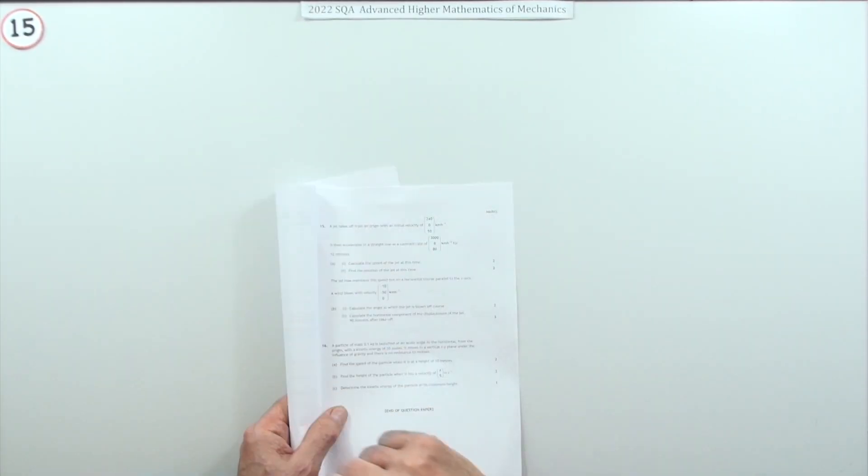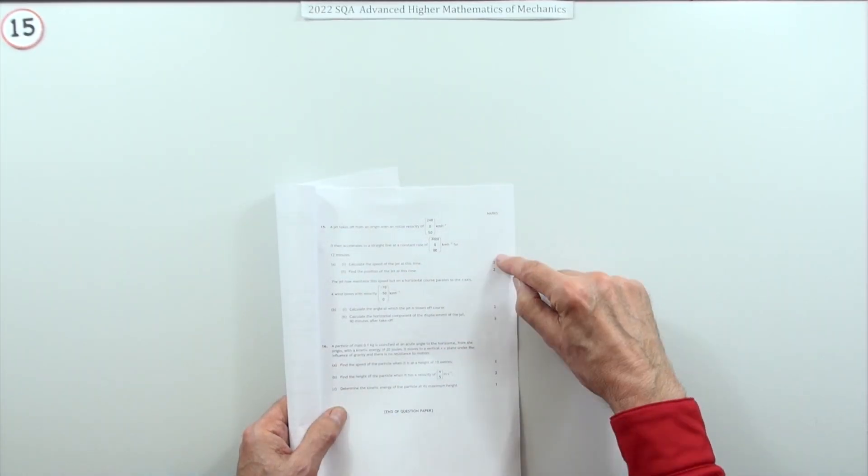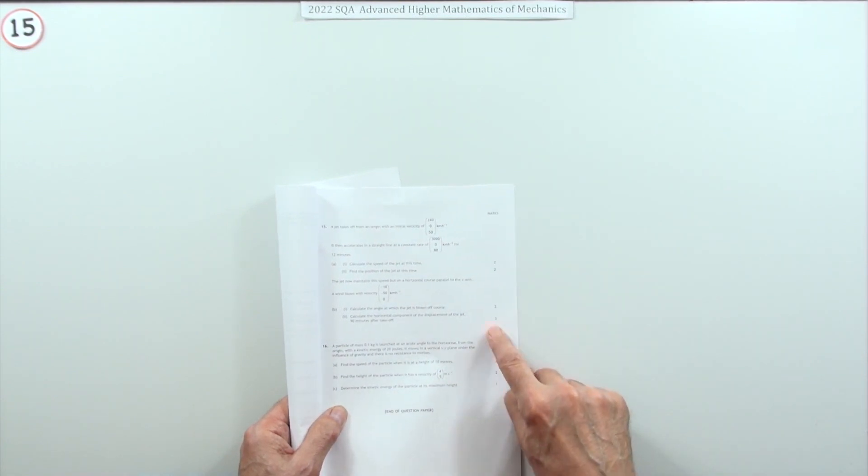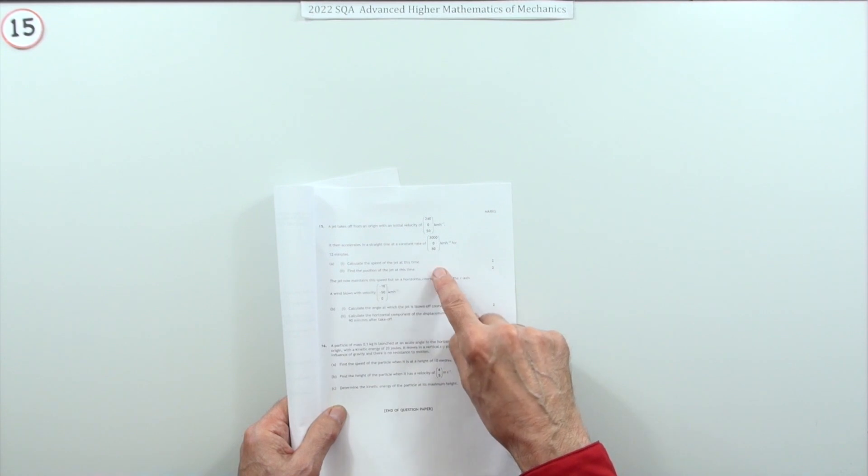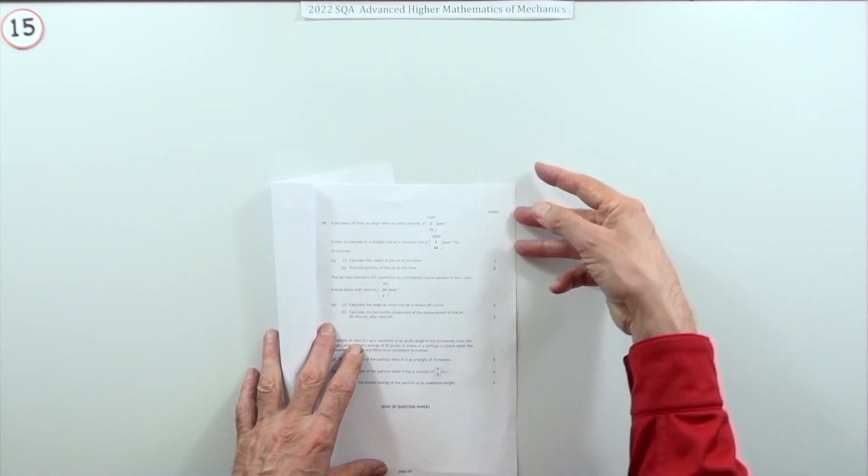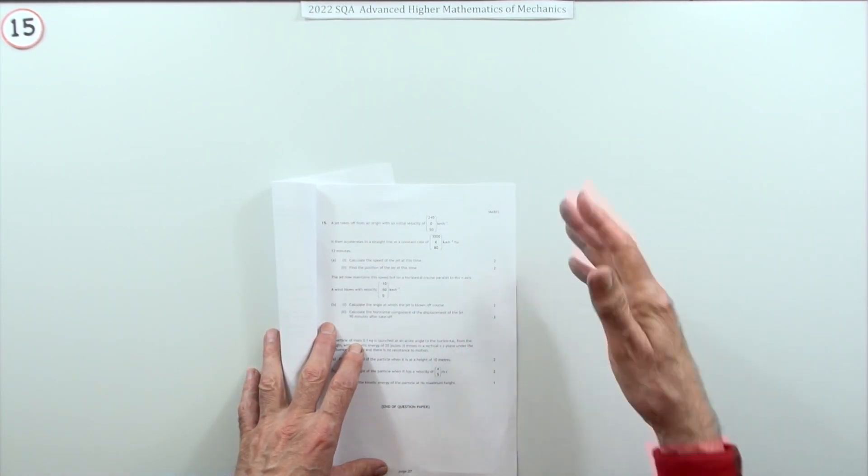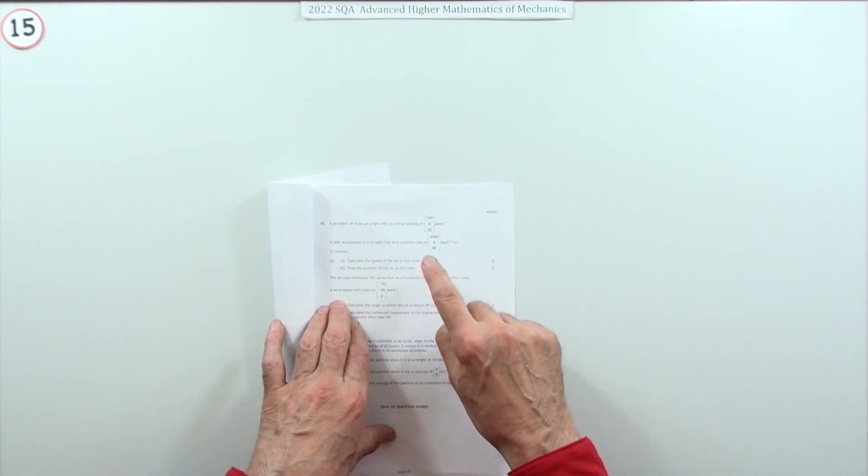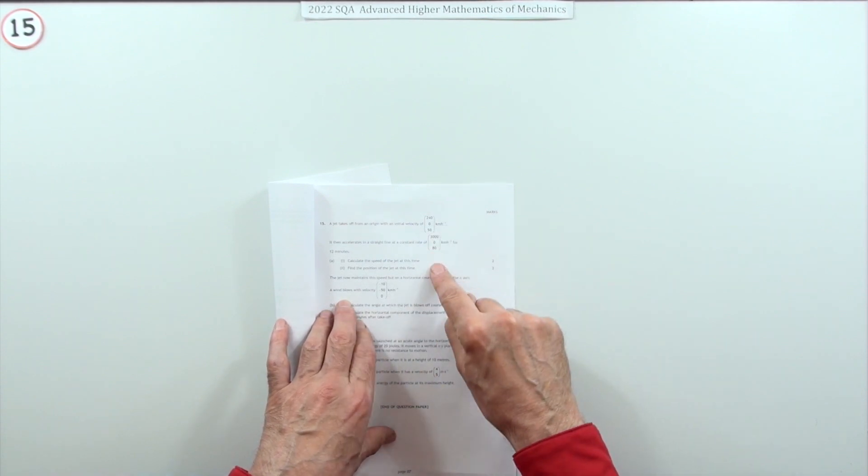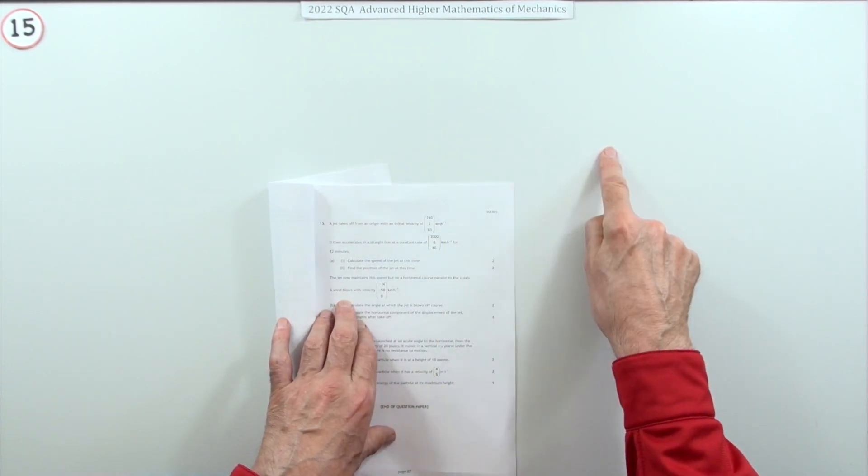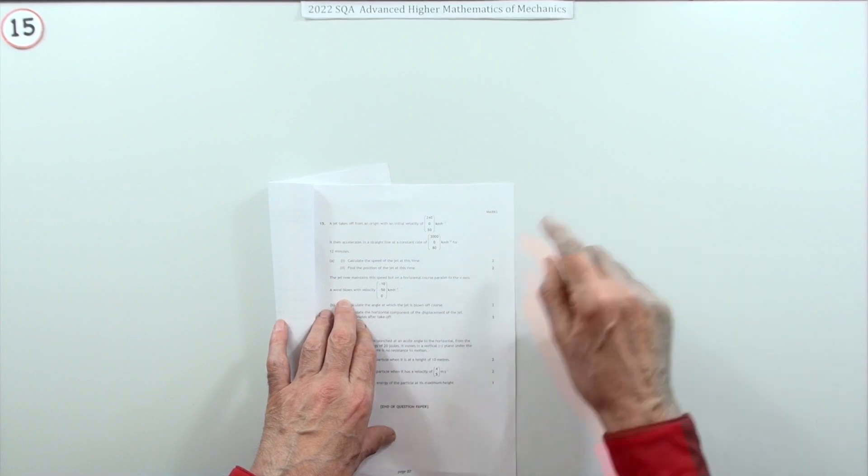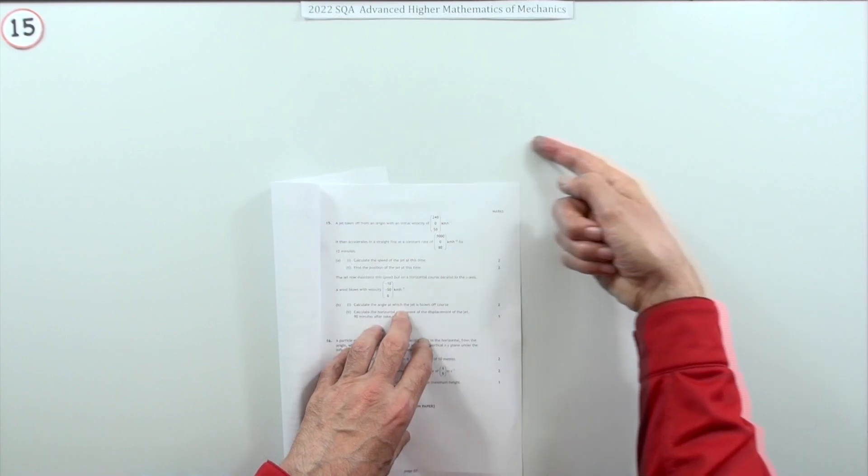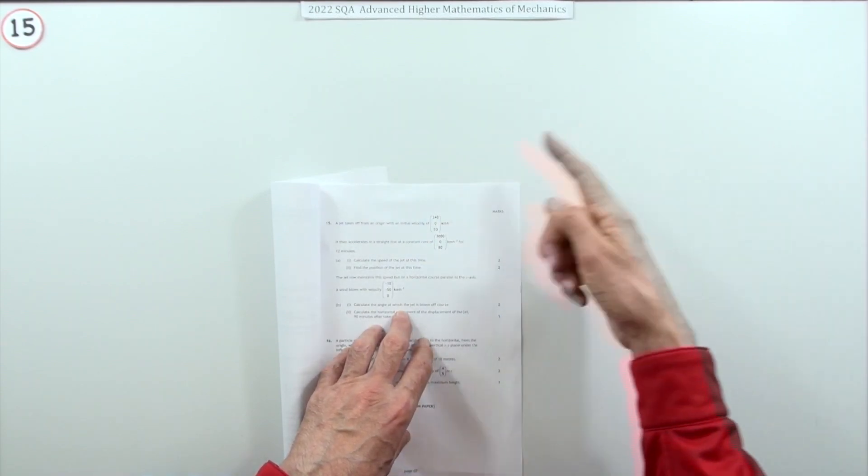So number 15 from the 2022 mechanics paper is a nine mark question, but it's really quite straightforward. Maybe it's nine marks because it's now going into three dimensions, which means you've got triple calculations to do, but it's still the same equations of motion. One difference is you'd have to be more careful about the language you use: speed, velocity, distance, displacement.